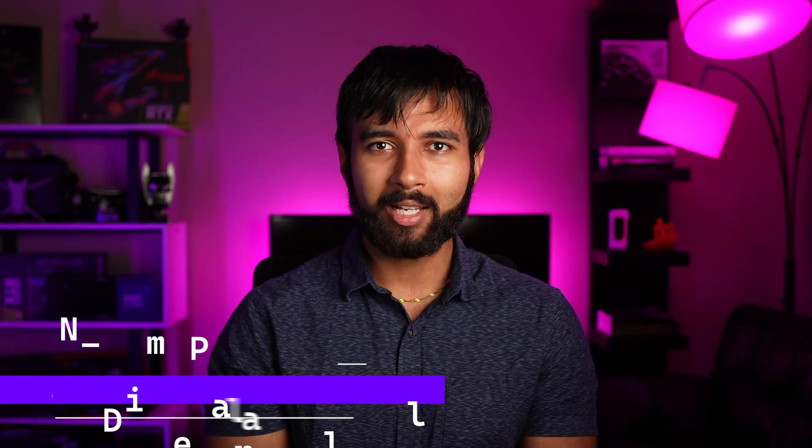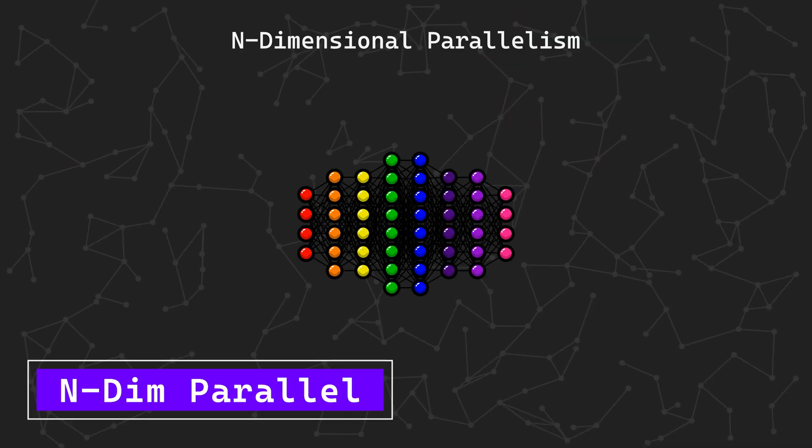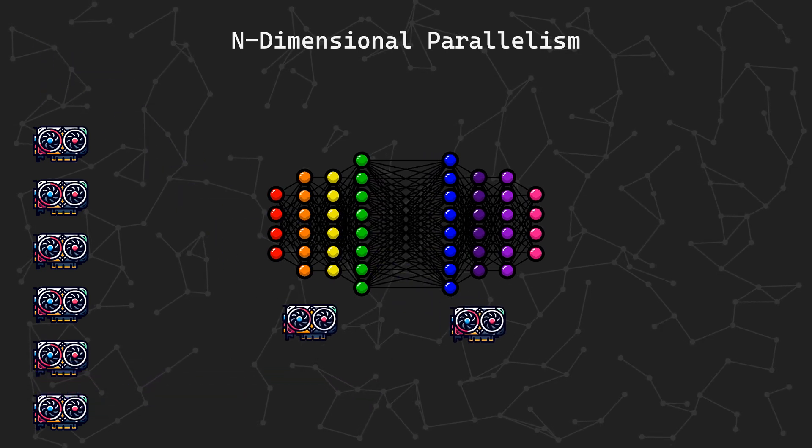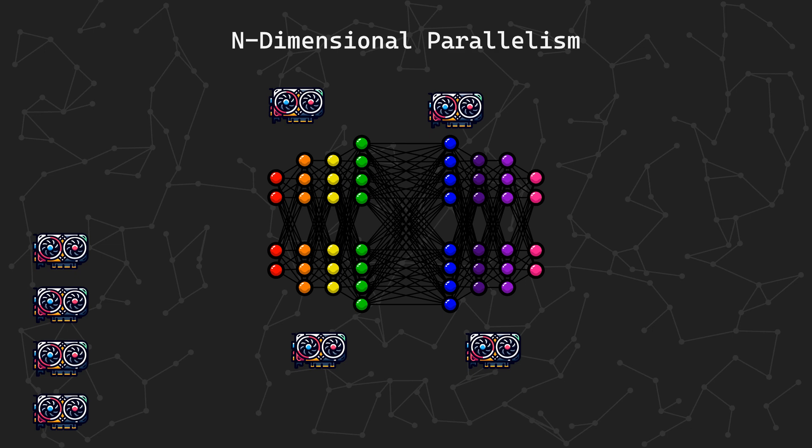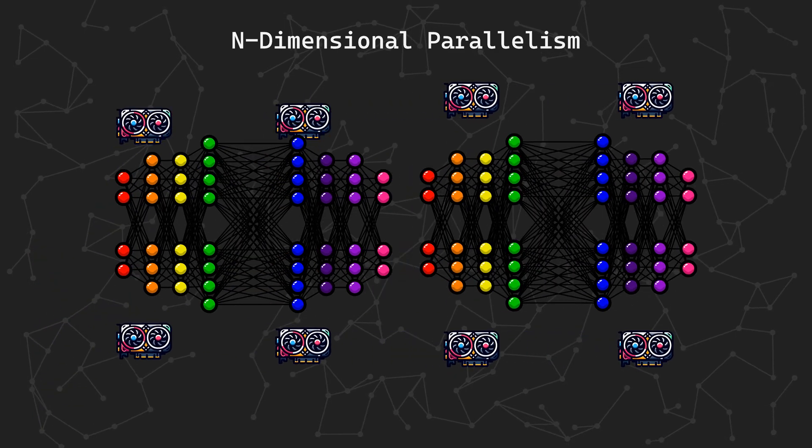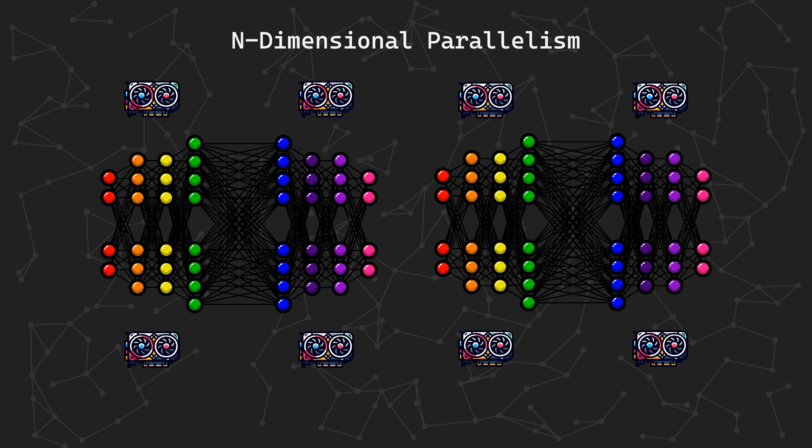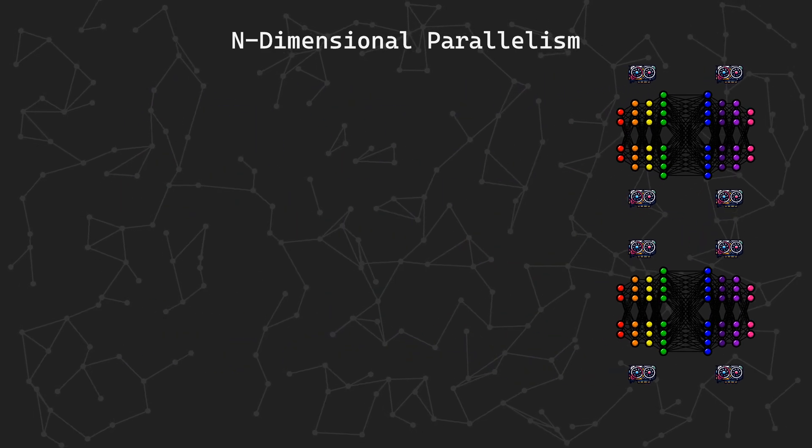Now for my favorite part, let's talk about how you can actually combine all three. Take this network as an example. Let's say that I have eight GPUs to train on. I can first split the network vertically with pipeline parallelism, then I can split the network horizontally with tensor parallelism, and finally I can duplicate the network with distributed data parallelism. This results in eight chunks that I can distribute to each of my eight GPUs. Training then commences like how you'd expect.